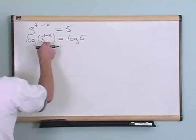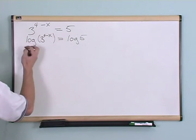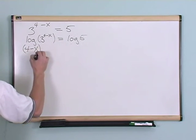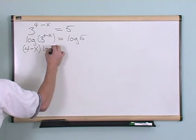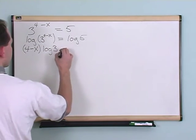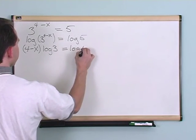Here I have an exponent inside here so I can pull that out. So that's going to be 4 minus x times the log of whatever is left over which is 3. Remember this is just a property we learned at the beginning. Equals log of 5.